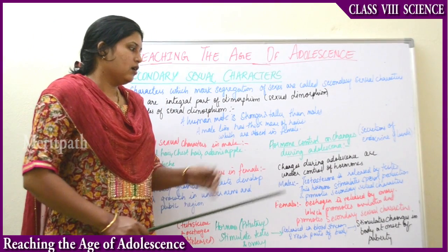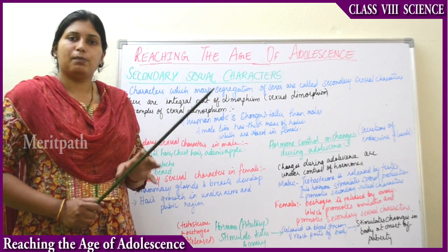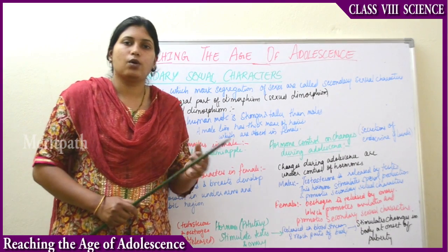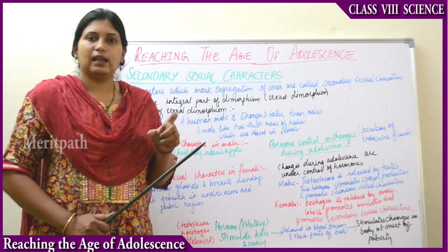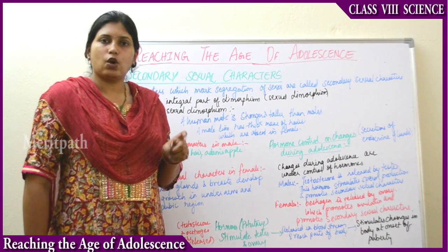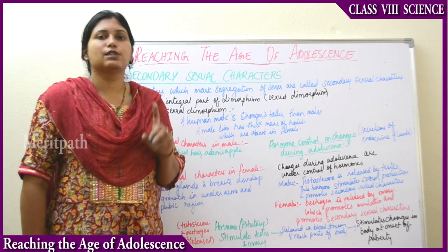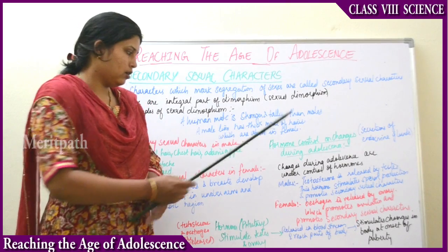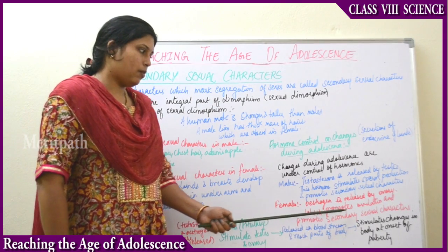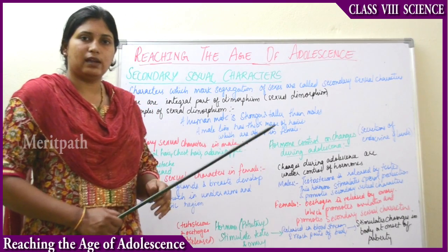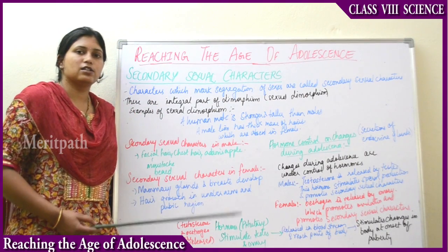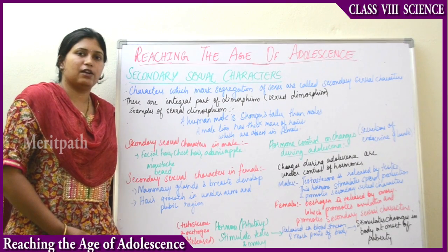In females, estrogen is released by the ovary. The ovary is part of the female reproductive system. Estrogen is the female sexual hormone — it promotes ovulation, which means the release of a single egg once every 28 days. This is called the ovulation cycle. Estrogen also promotes secondary sexual characters. So now we have understood why secondary sexual characters develop and why they are developing in the body.